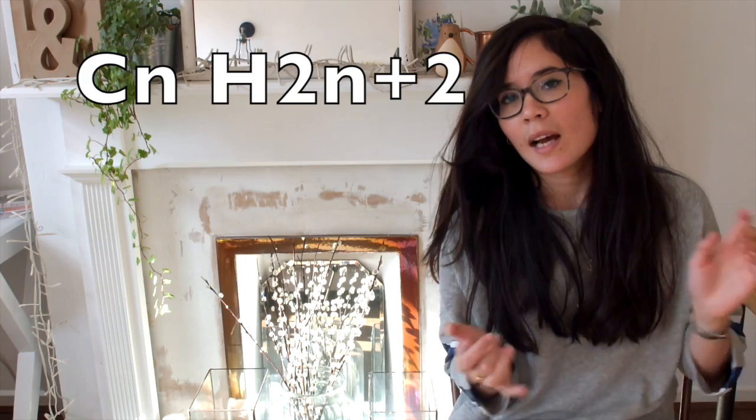First of all, it's super important that you understand that families of compounds exist and therefore they have similar properties. Different families include things like the alkanes. Remember they have a general formula of CnH2n plus 2. Alkenes, they have a general formula of CnH2n. Remember they all have a carbon-carbon double bond which means they're unsaturated.